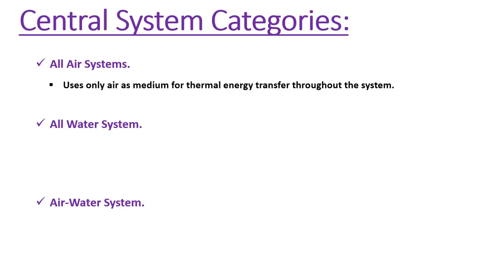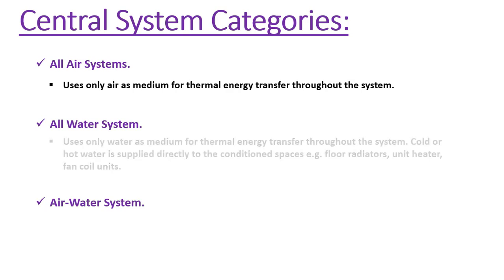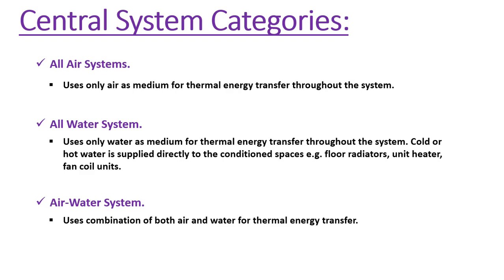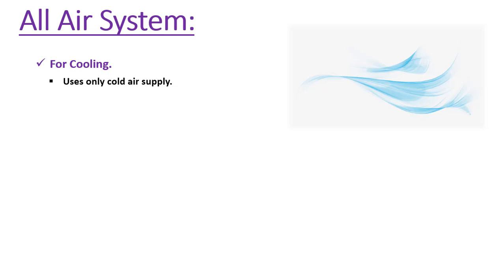All air systems use only air as the medium for thermal energy transfer throughout the system, while all water systems use only water as the medium. Cold or hot water is supplied directly to the conditioned spaces; examples include flow radiators, unit heaters, and fan coil units. Air-water systems use a combination of both air and water for thermal energy transfer.